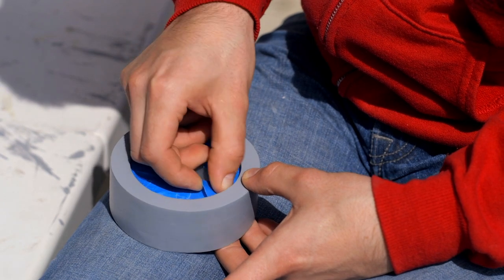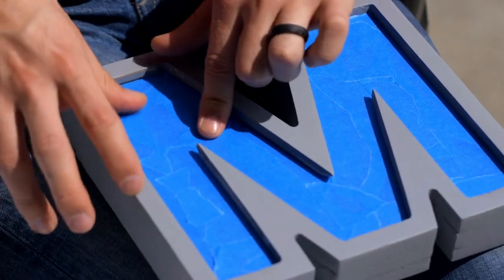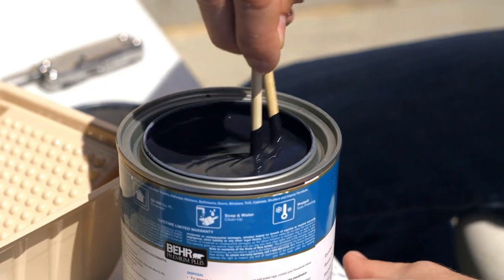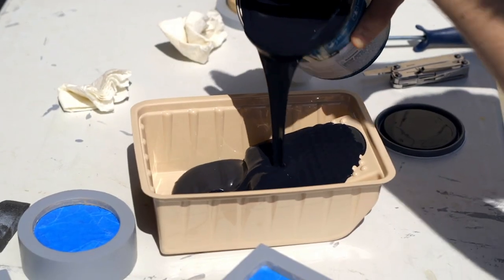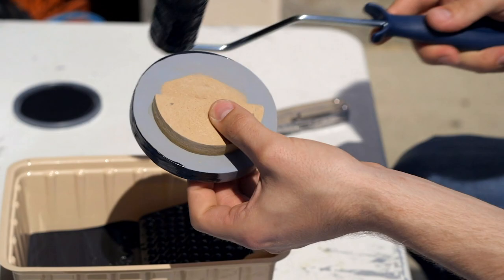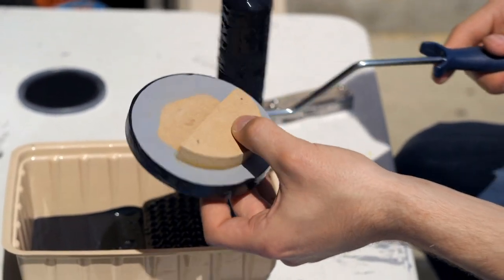Since I did already have the plexiglass in there, I would need to tape it off to make sure that I get as little paint on it as possible. Did a little mix-up of the paint, poured it in, and used this foam roller to help put the paint on each of the different pieces.